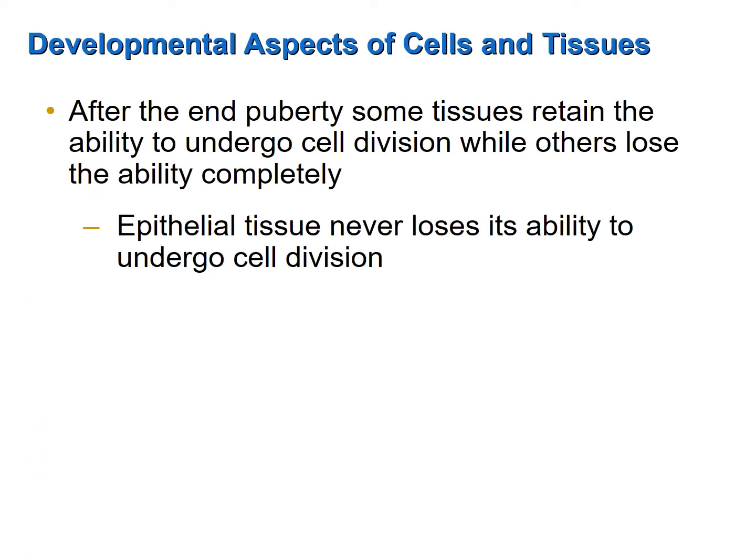After the end of puberty, some tissues still retain their ability to undergo cell division, while others lose this ability. Epithelial tissue, for example, which is responsible for covering and protecting organs of the body, covering the outer surface of the body as the epidermis, and lining the surfaces of hollow organs such as the GI tract and respiratory tract, never loses its ability to undergo cell division, because these cells are constantly being destroyed and sloughed off by abrasion and must be replaced.